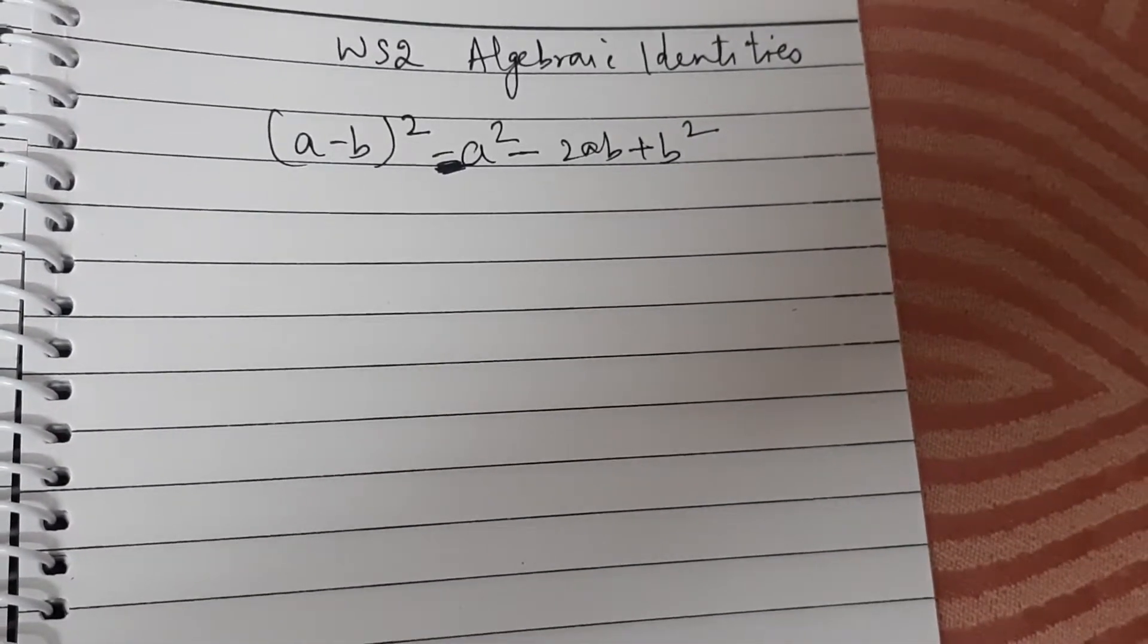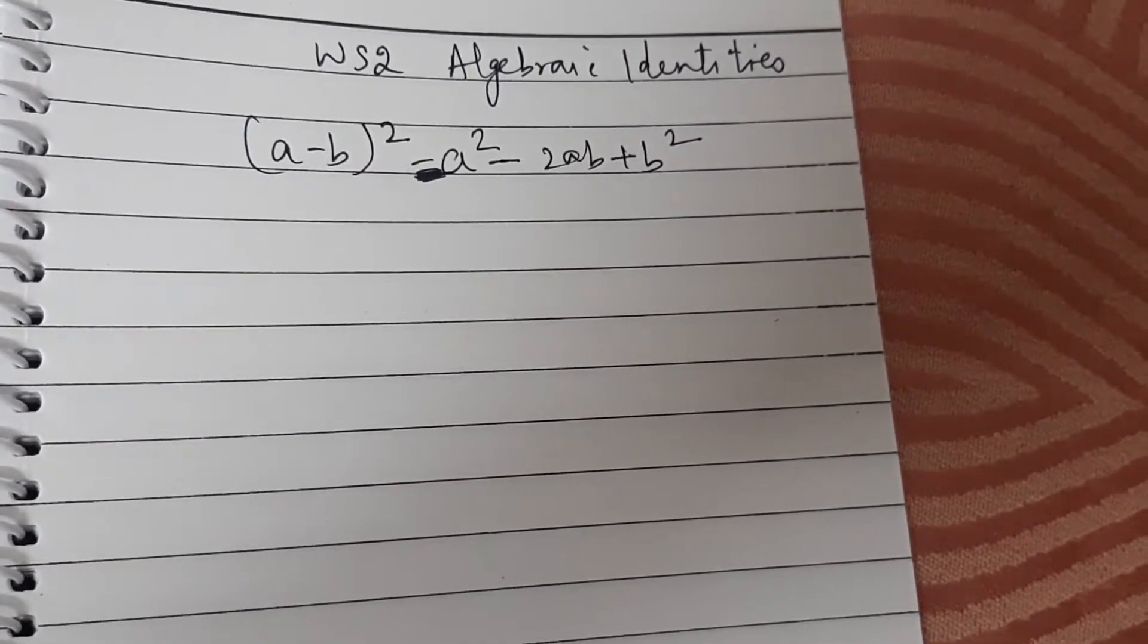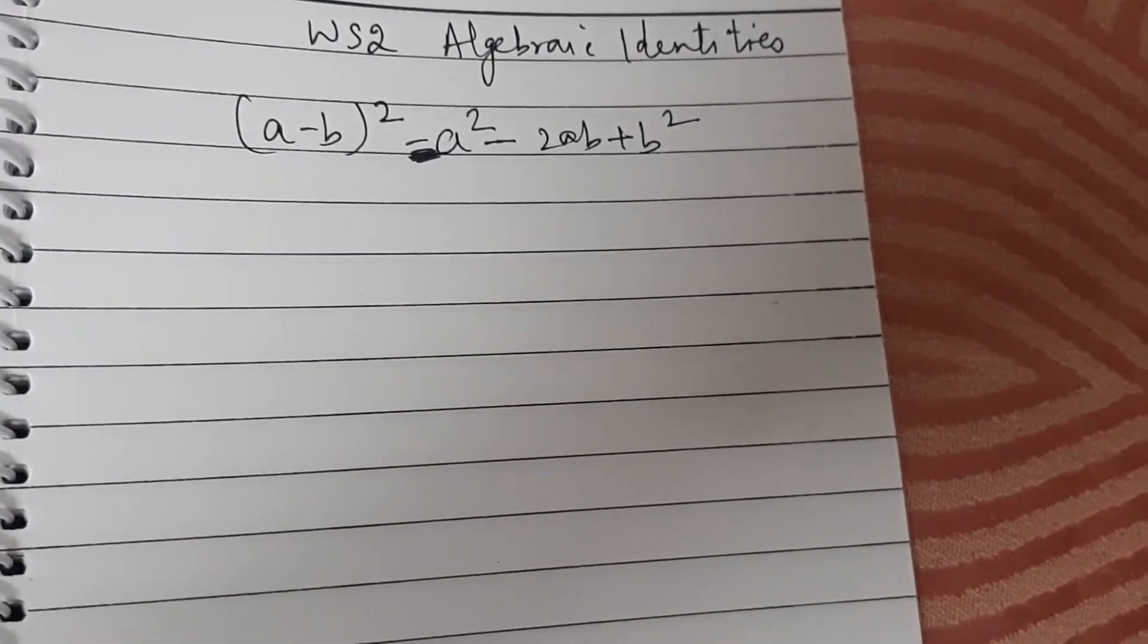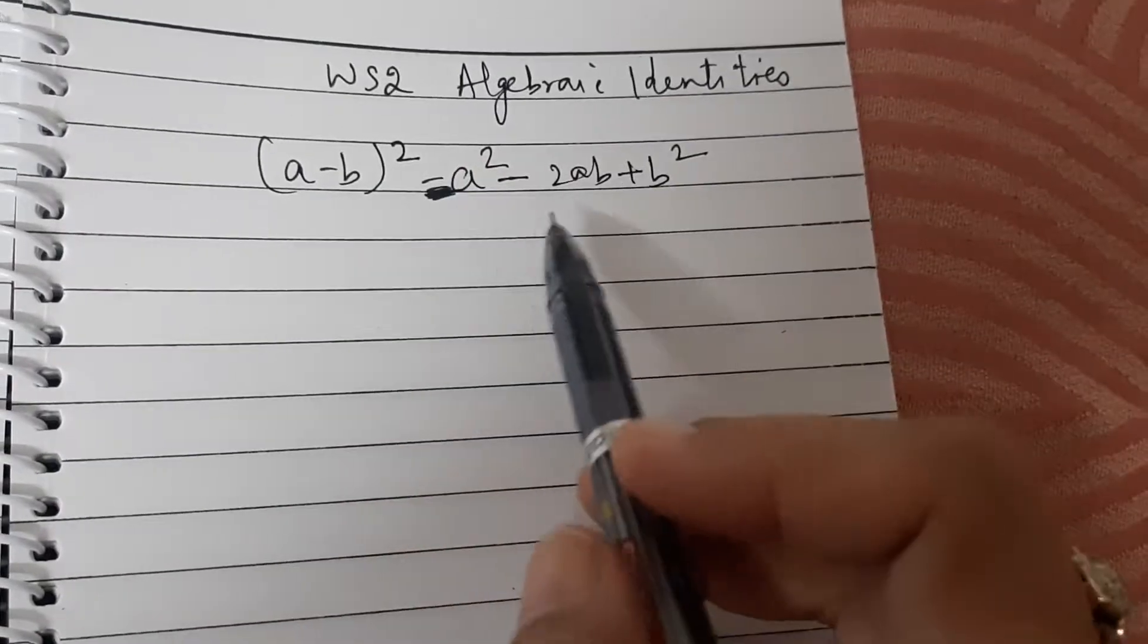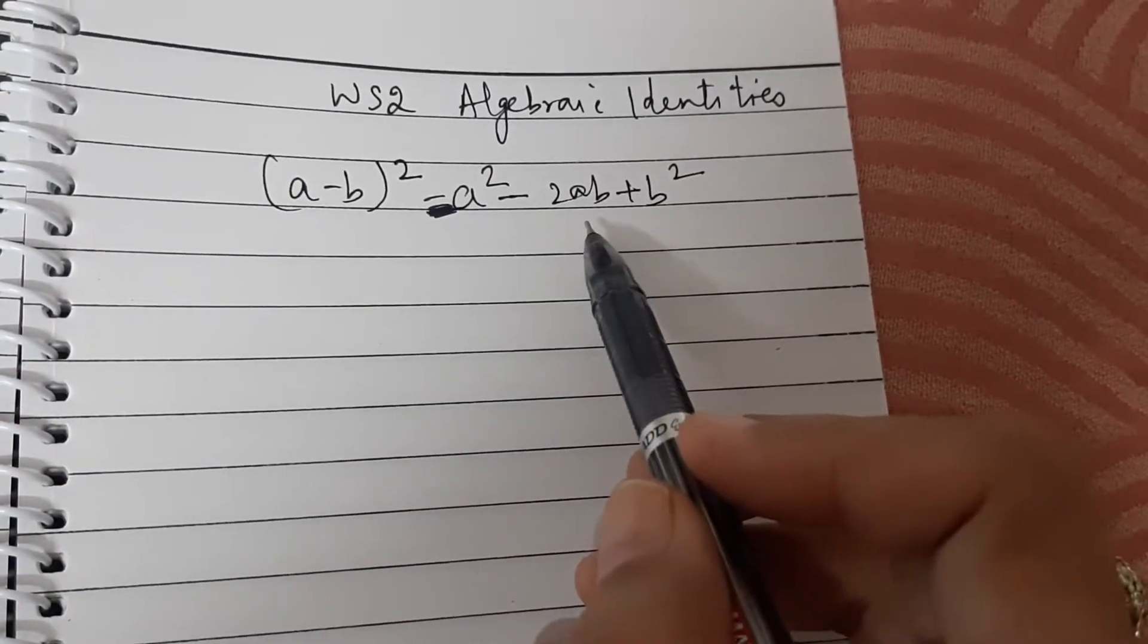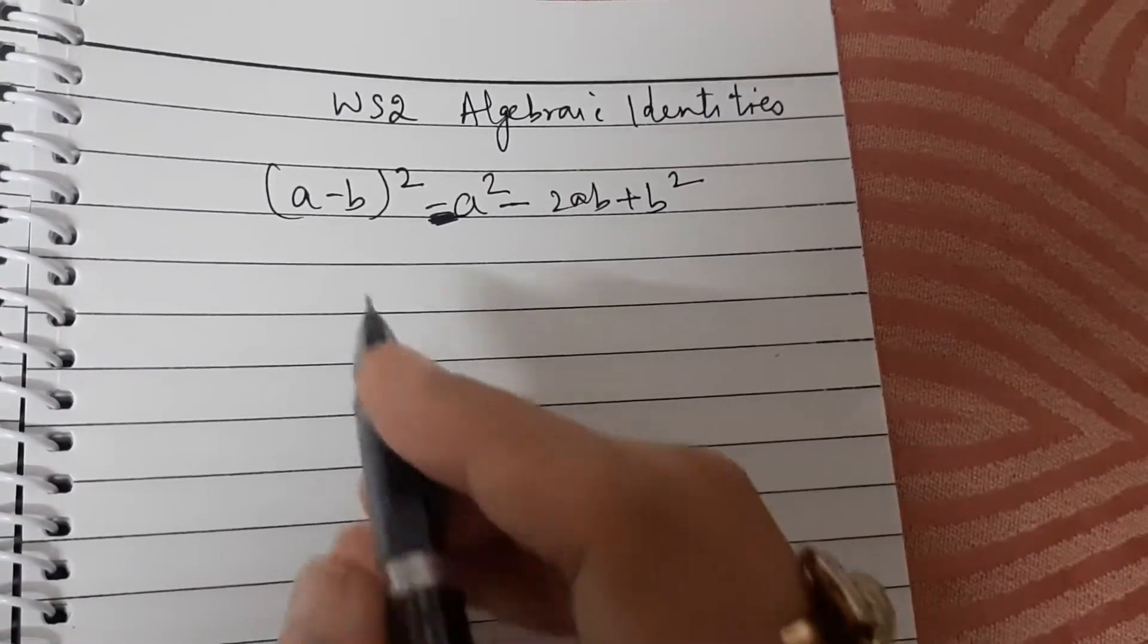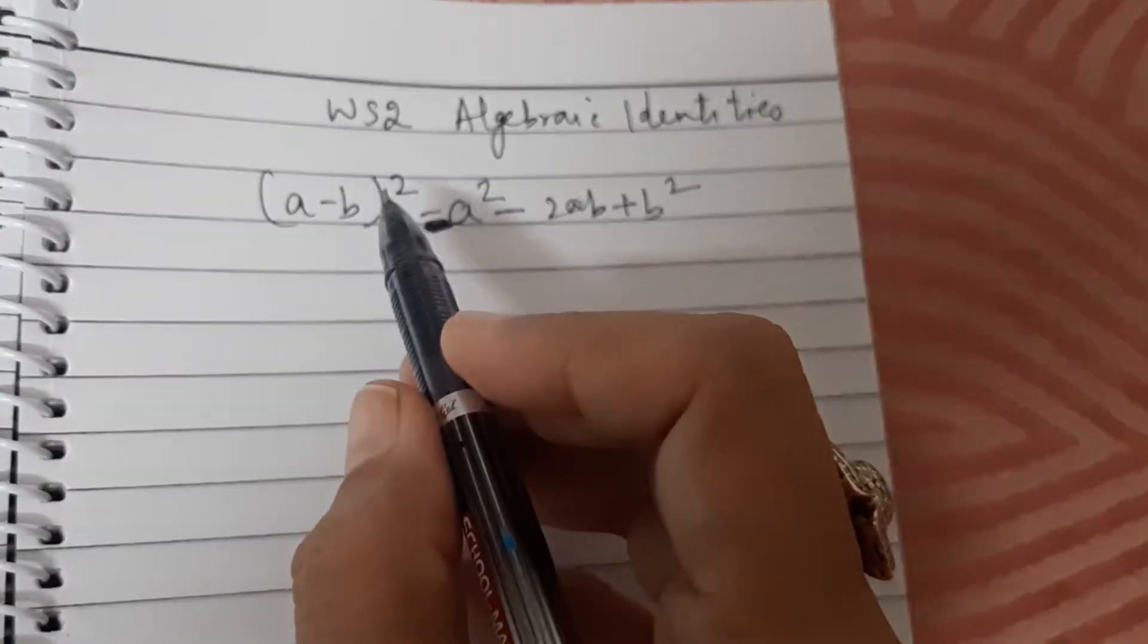Dear students, in this video we will discuss some questions based on the algebraic identities: a minus b whole square is equal to a square minus 2ab plus b square. This is worksheet 2.